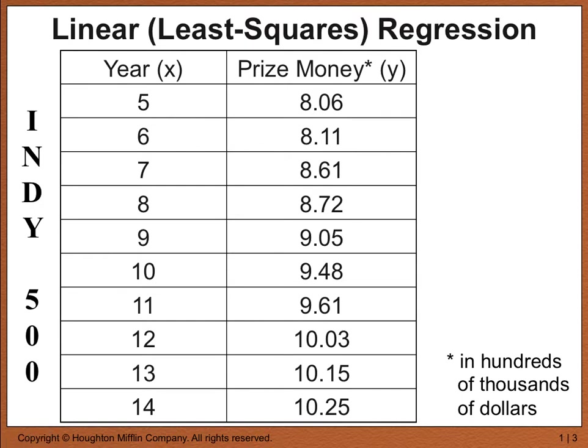Just by looking at these points, we can see that as the years increase, the prize money increases — that's common sense because of inflation. But we want to see what the rate of increase is; in other words, what line would fit best to these actual points. What we're going to do on our calculators is generate a scatter plot and then try to fit a line to it.